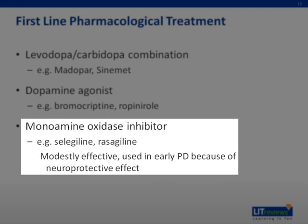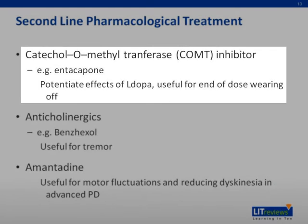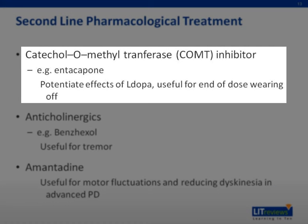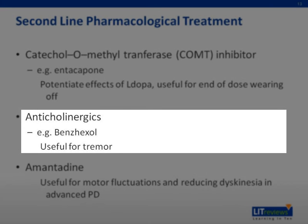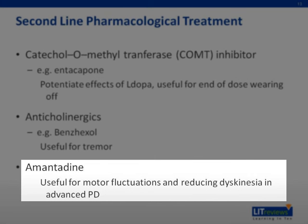Monoamine oxidase inhibitors are modestly effective in symptomatic treatment. Catechol-O-methyl transferase inhibitors like entacapone are used in combination with levodopa to potentiate its effects and are useful for end-of-dose wearing off. Anticholinergics like benzhexol are used predominantly to treat tremors. Amantadine is useful for motor fluctuations and reducing dyskinesia in advanced Parkinson's disease.